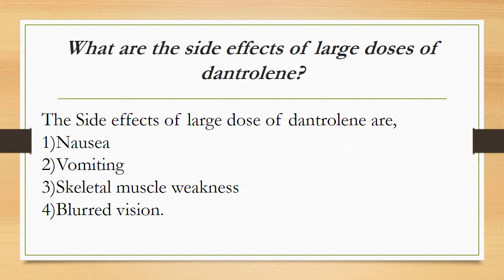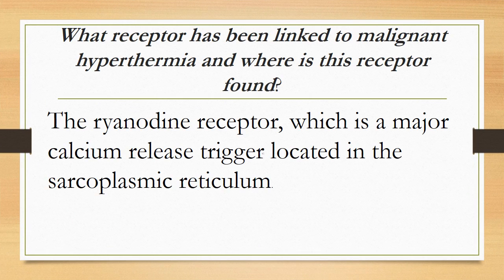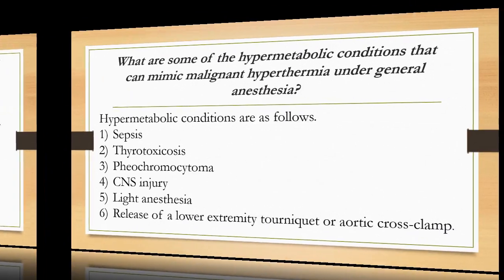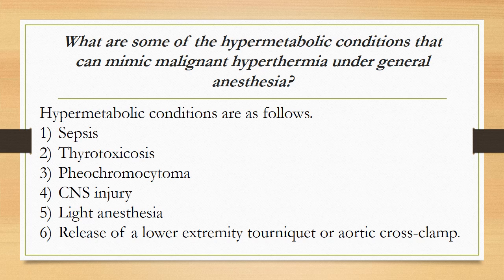What are the side effects of large doses of dantrolene? The side effects are: 1) nausea, 2) vomiting, 3) skeletal muscle weakness, and 4) blurred vision. What receptor has been linked to malignant hyperthermia and where is it found? The ryanodine receptor, which is a major calcium release trigger located in the sarcoplasmic reticulum.